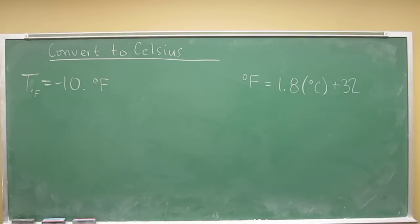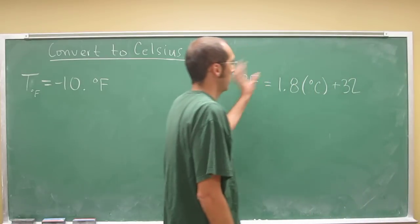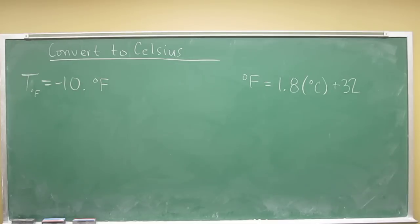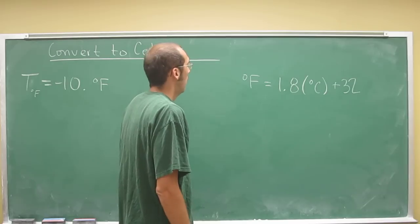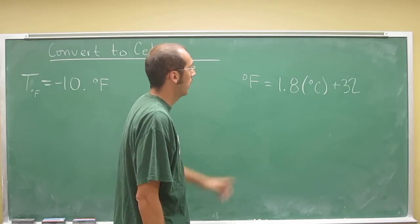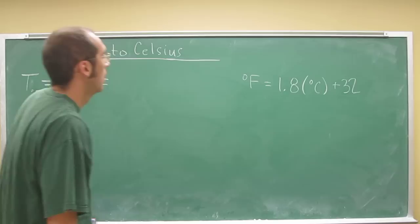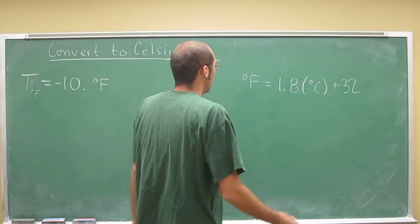So if you've memorized one of these formulas, you don't have to memorize the other one because you can just convert back and forth. So in this case, we've isolated the Fahrenheit variable, but when we convert the equation, we need to isolate the Celsius variable. So let's do that.